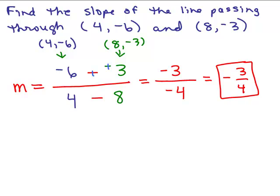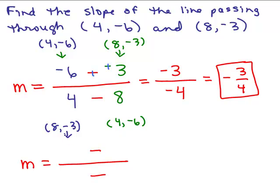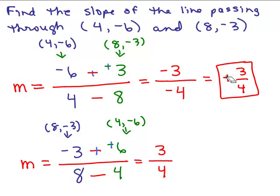What if I had switched and done it the other way? Let's put (8, −3) first and (4, −6) second. Before the minus sign, put negative 3 over 8. For the other ordered pair, put negative 6 over 4. Then: negative 3 minus negative 6 gives negative 3 plus 6, which is 3. And 8 minus 4 is 4. So we get 3 fourths — the same answer. A negative divided by a negative is positive.